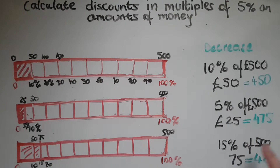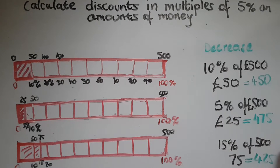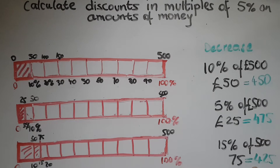And if the discount is 15 percent, then 15 percent of 500 is 75, taken away from the 500, that gives us 425. So really, discount is decrease.